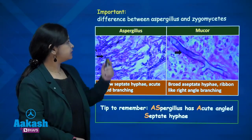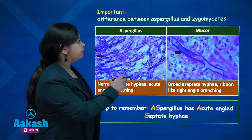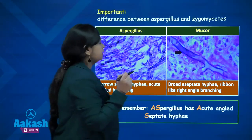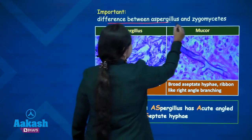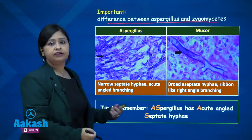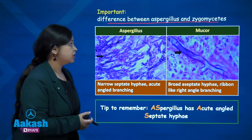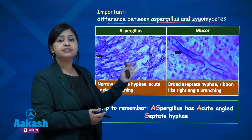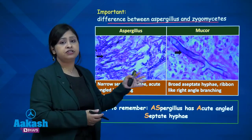This slide is very important because I would like to tell you the difference between aspergillus and zygomycetes. This is important because after the COVID pandemic there were a huge number of cases of mucormycosis. You need to differentiate between aspergillus and mucor, and why this is important because the treatment of both infections is very different.